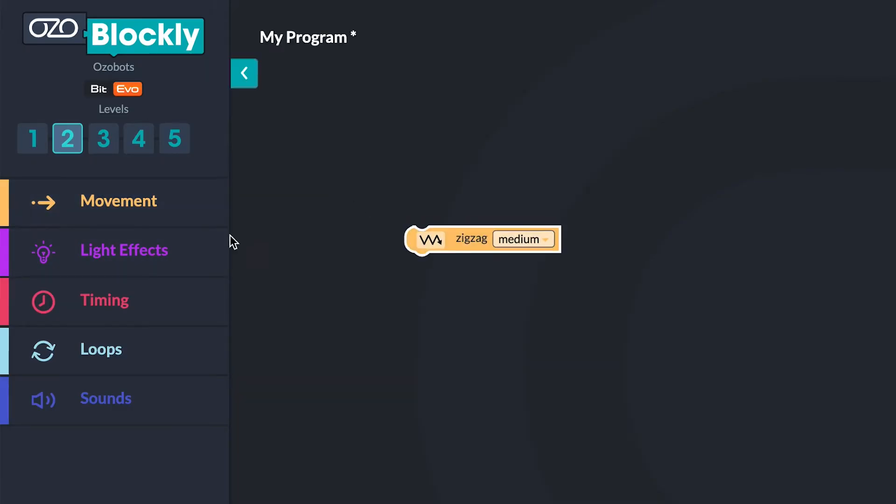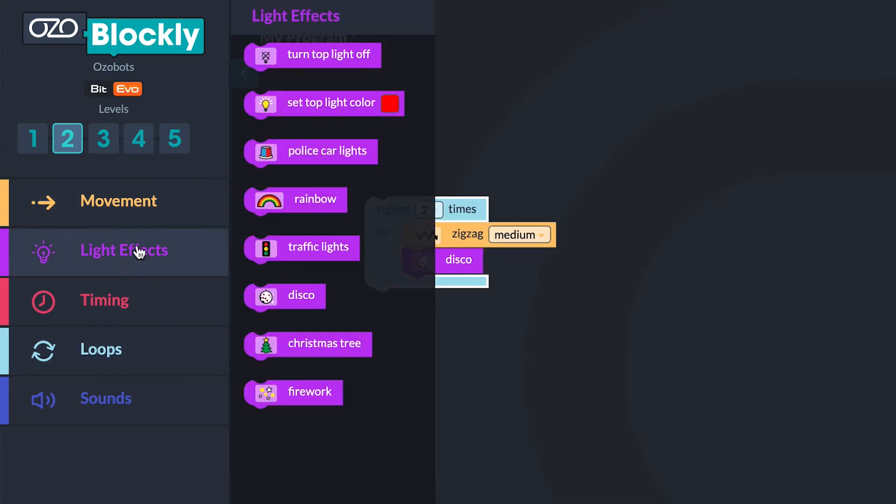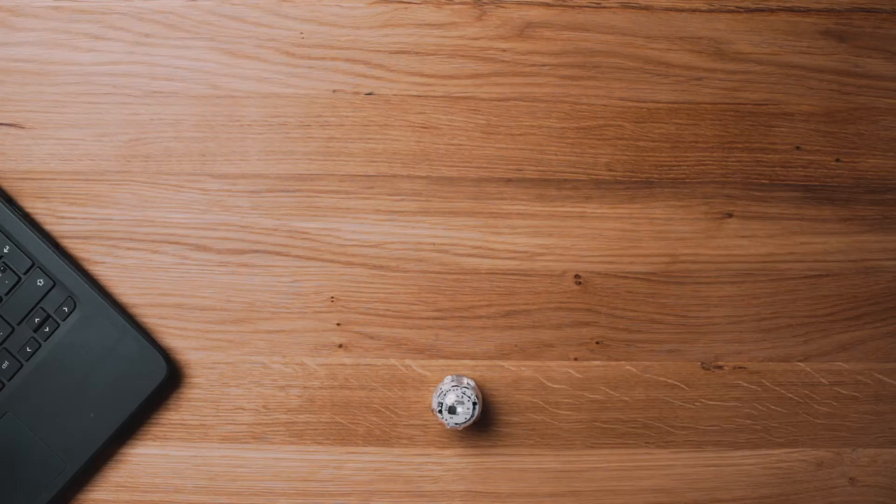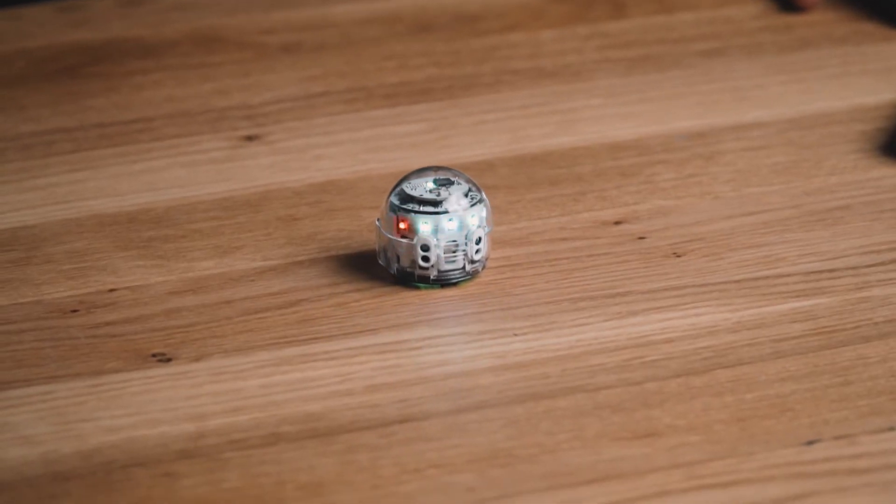When you're programming with Ozobot Blockly, you can customize EVO's light colors using light effects blocks.